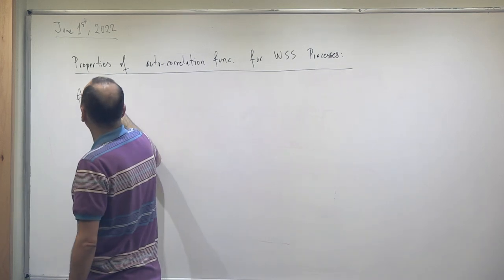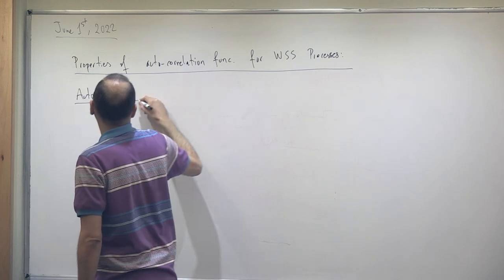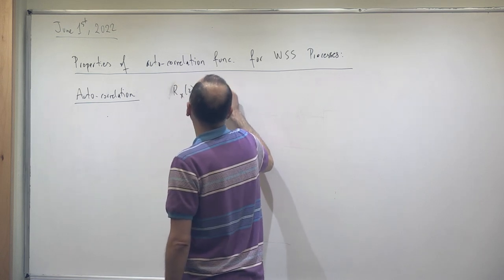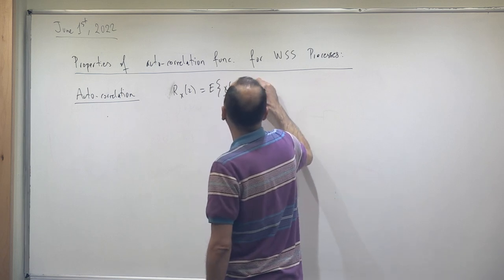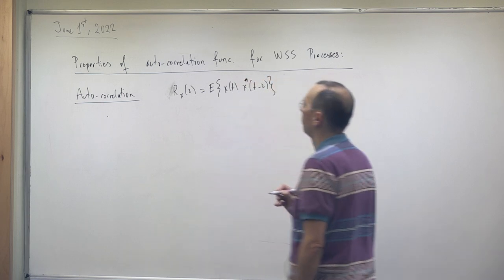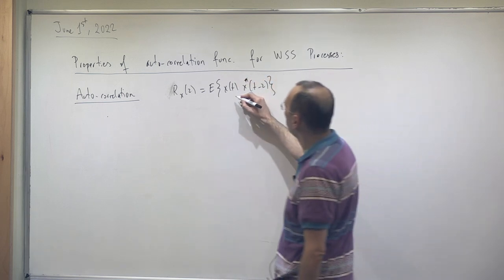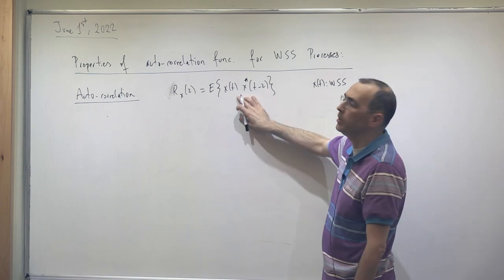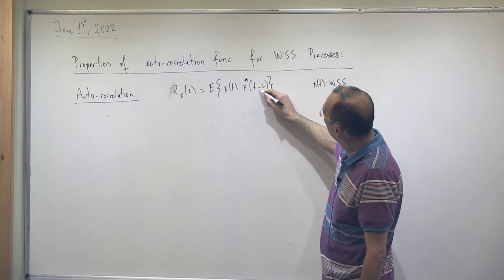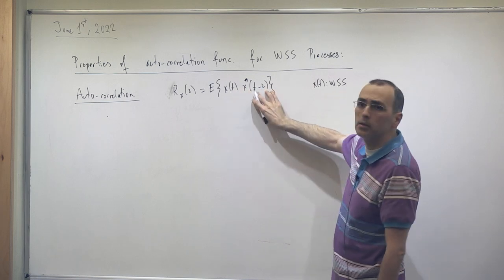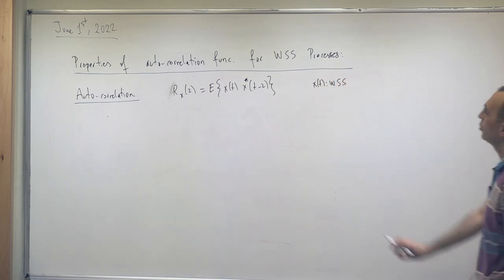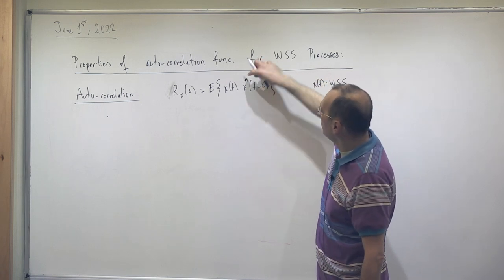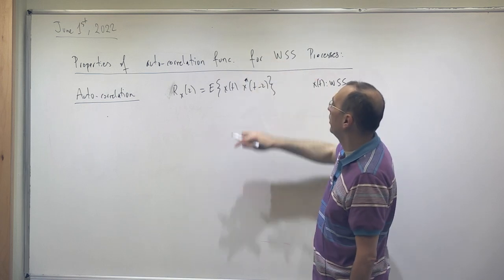Let's remember the autocorrelation: R_X(τ) is the expected value of X(t) times X conjugate of (t minus τ). If X(t) is wide-sense stationary, we don't have any dependence on t, because T1 minus T2 equals τ. The conjugate indicates this is the second variable.